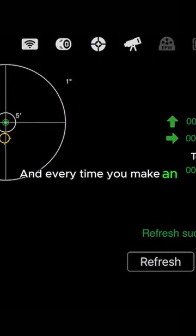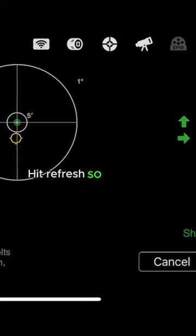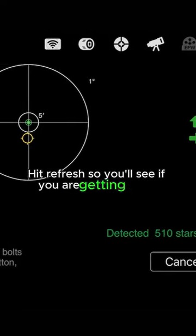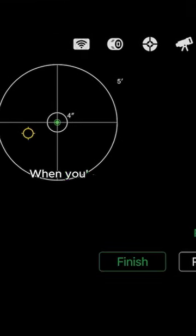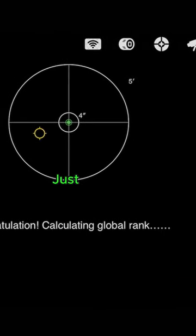And every time you make an adjustment to the mount hit refresh so you'll see if you are getting closer. You need to get those numbers as low as you can. When you're happy with your polar alignment just press finish.